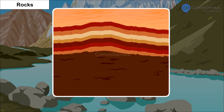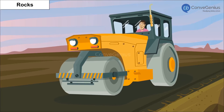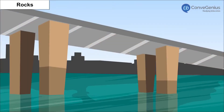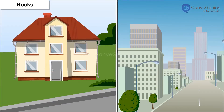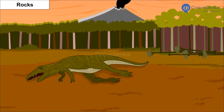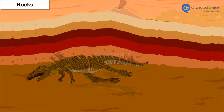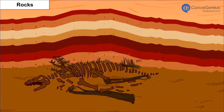Rocks are very useful to humans. They are used in constructing roads, bridges, houses and buildings, etc. When dead animals and plants remain between rock layers in the crust, they form fossils.